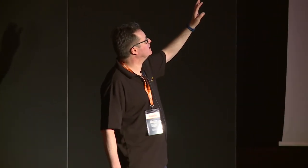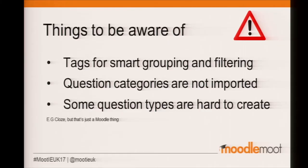This plugin supports tags for smart grouping and filtering, which in some ways is an alternative to question categories — because logically a question could belong to multiple categories, but you can't do that with categories, whereas a question can have multiple tags. A couple of things to be aware of: it doesn't import categories, which threw me at first since I'm a big fan of question categories. Also, some question types are really hard to create — for example the core Cloze — but there are some very easy-to-use question types from third parties.